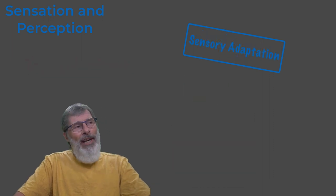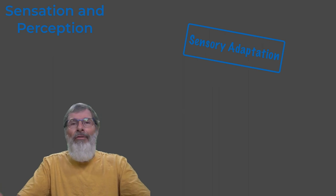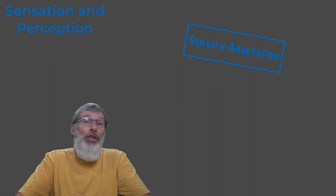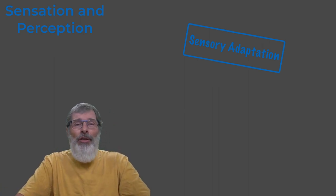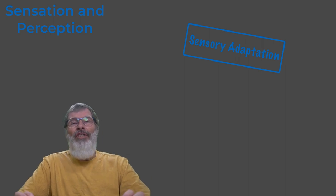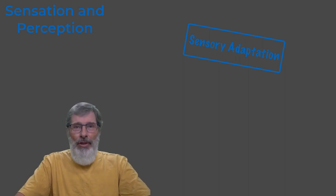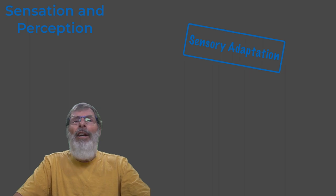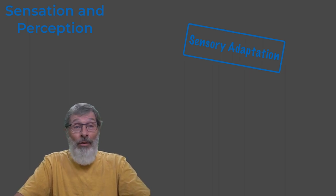Now there's a term that's used for this process and it's called transduction. Transduction is the process through which sensory receptors convert the sensory information and stimulation into electrochemical impulses. Now these electrochemical neural impulses are sent to our brain and our brain then makes sense of this information in a way that allows us to navigate the world.